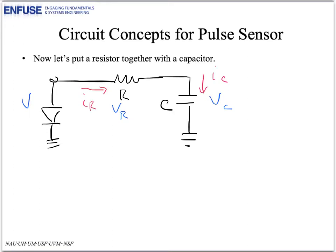So from Kirchhoff's voltage law, we have that V, the source voltage, is equal to V sub R plus V sub C. And Kirchhoff's current law tells us that the current through the resistor and the capacitor is equal. So we have I sub R is equal to I sub C.